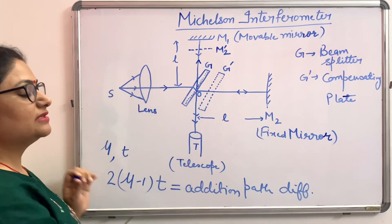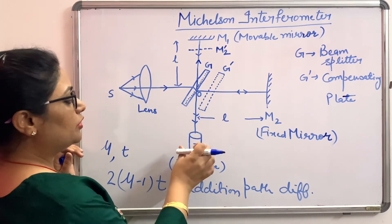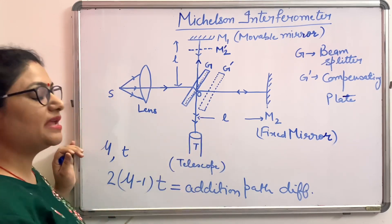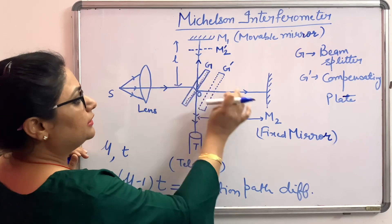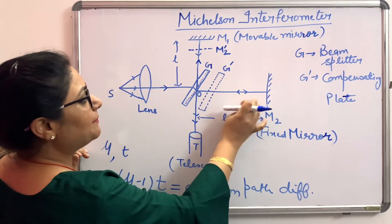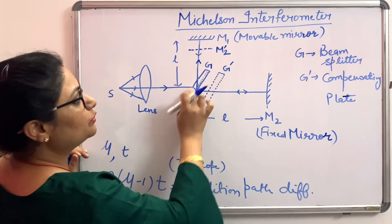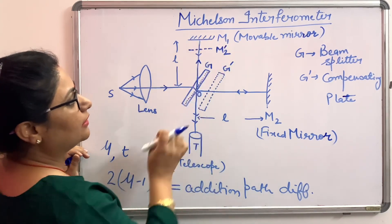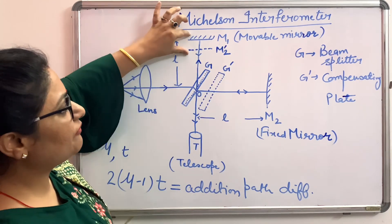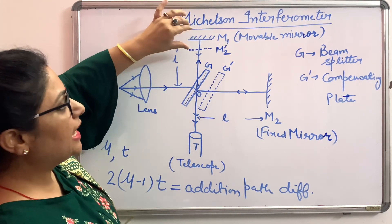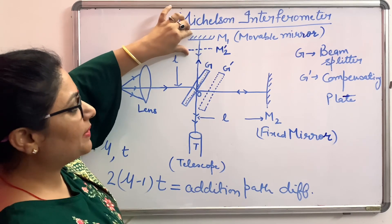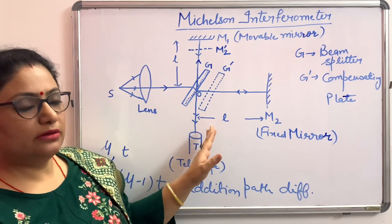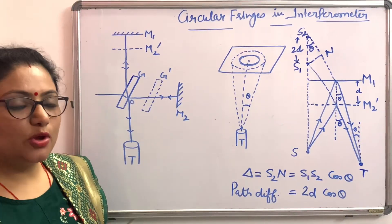Now the apparatus is ready to take readings. The interference pattern can be analysed as if mirror M2's image M2 dash is seen through the glass plate. M2 dash and M1 act as the two surfaces of a parallel thin film, and interference takes place between these two surfaces. The pattern is observed through the telescope kept below.